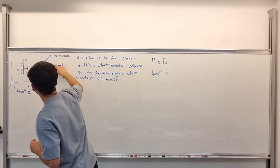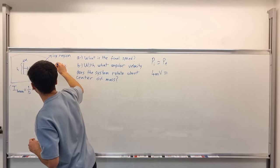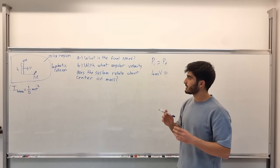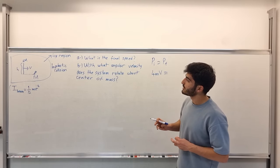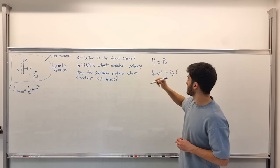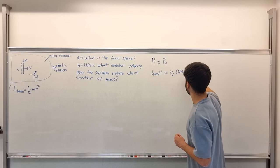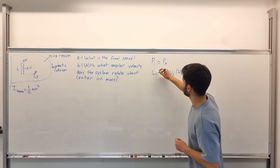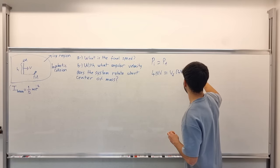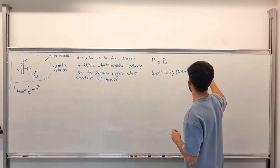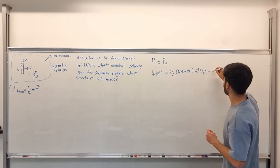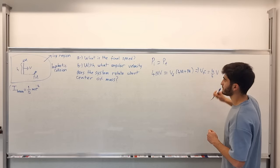Actually, this is not an elastic collision — they collide and stick together, making it a perfectly inelastic collision. So the final momentum is the total mass (4m plus m) times the final velocity v_final. We find that v_final equals 4 over 5 times v.